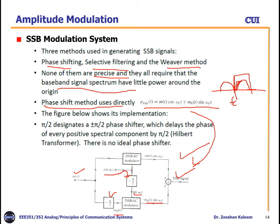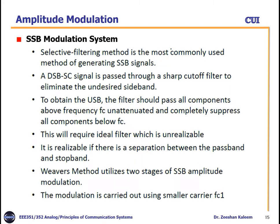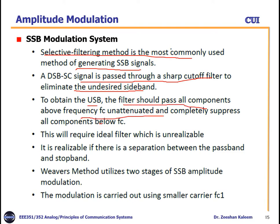The selective filtering method is the most commonly used method for generating SSB signals. A double sideband signal is passed through a sharp cut-off filter to eliminate the undesired sideband. To obtain the upper sideband, the filter must pass all components above fc unattenuated and completely suppress all components below fc — this requires an ideal filter which is unrealizable. It is only realizable if there is some separation between the pass and stop bands.